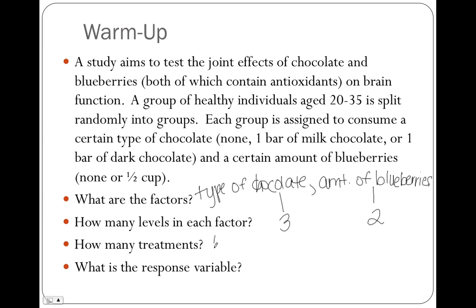Because of that, there are six possible treatments: no chocolate/no blueberries, milk chocolate/no blueberries, dark chocolate/no blueberries, no chocolate/half a cup of blueberries, milk chocolate/half a cup of blueberries, and dark chocolate/half a cup of blueberries. Every possible combination results in a treatment.